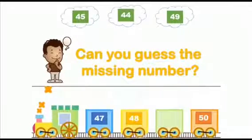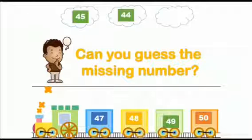Wow. Now, this colorful train has some numbers. Let's speak aloud. 47, 48, dash and 50. Oh, one number is missing over here. And let's see, some of the numbers are given to you in the clouds. These numbers are 45, 44, 49. So, can you guess the missing number of the train from these three numbers given in the cloud? Yes, it's 49. Very good.